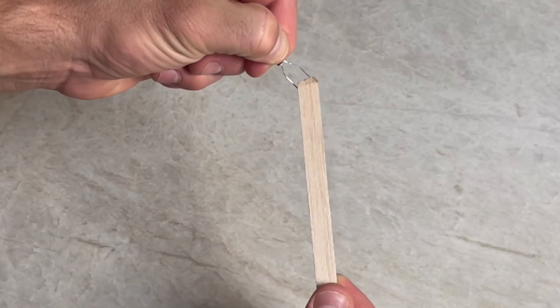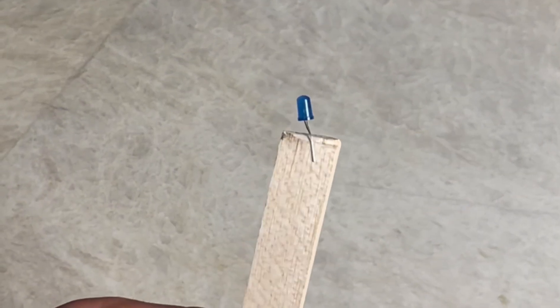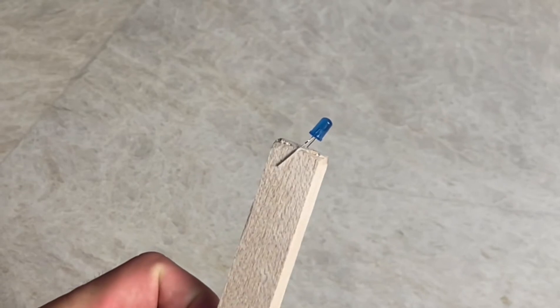Make sure you remember though which side that shorter wire went on because that's going to be the top of our flashlight and here is about what it should look like before we move on to the next step.